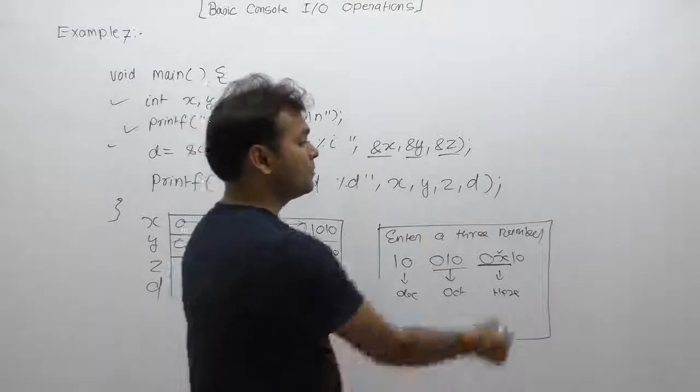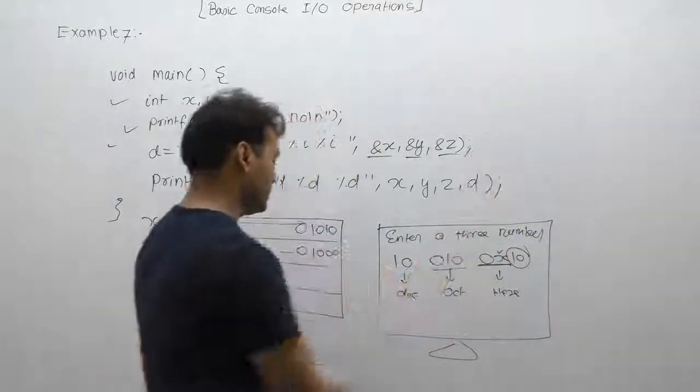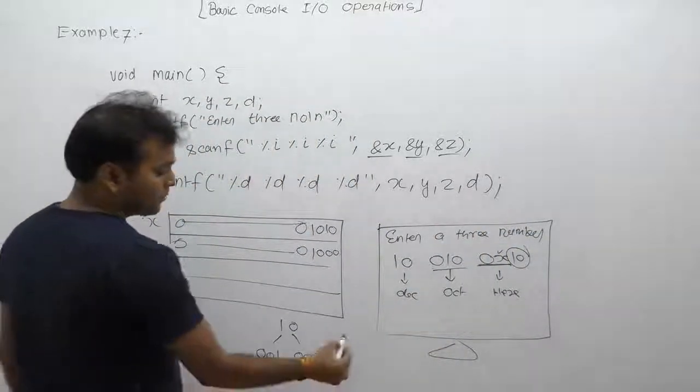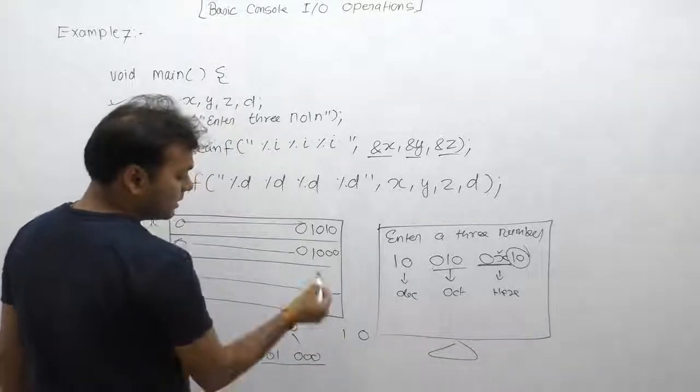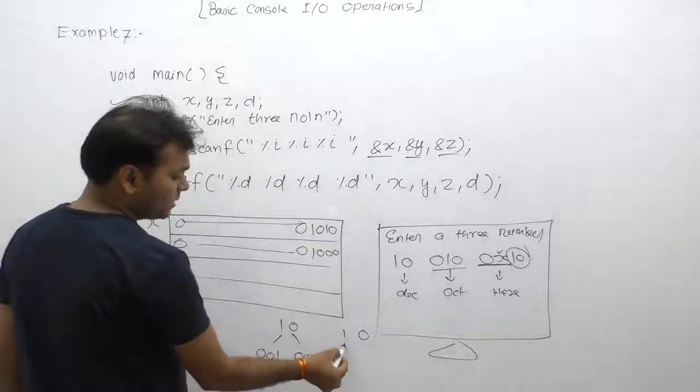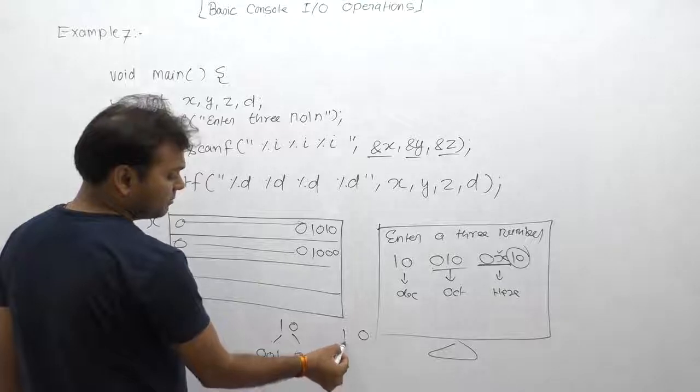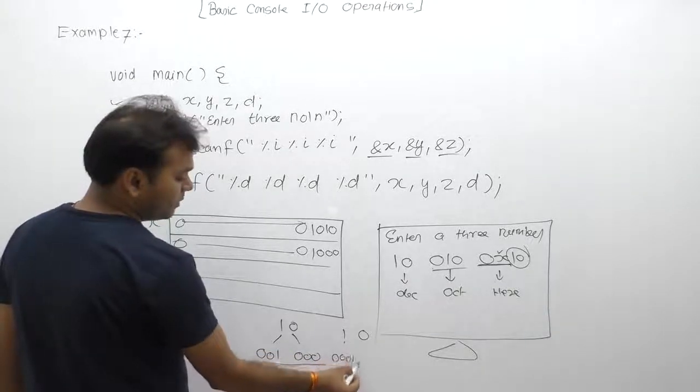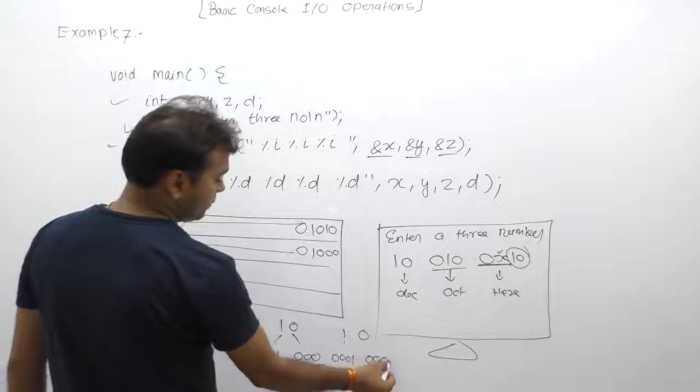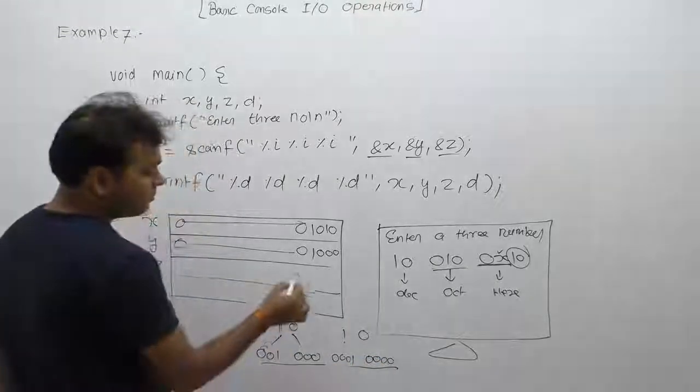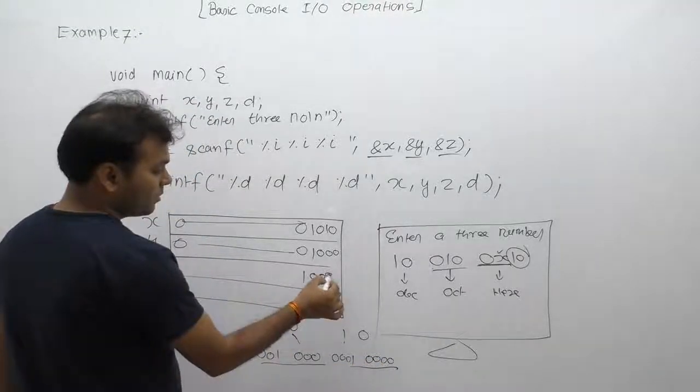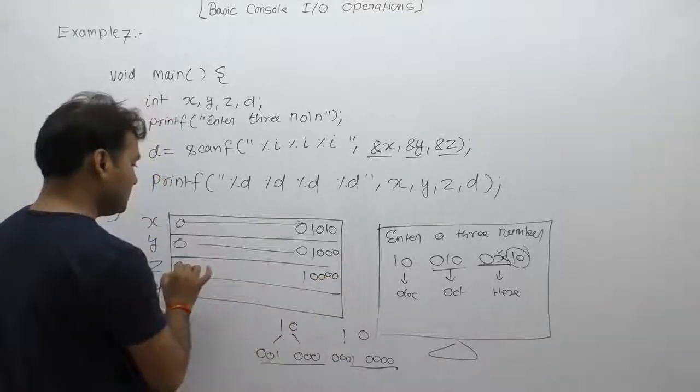Therefore one zero is considered as hexadecimal. Hexadecimal ke according one zero ka decimal binary representation. Four digits binary represent. Four digits mein one ka binary 0001, zero ke case mein four times zero. Therefore this is the final binary number. Next one, remaining times zero.